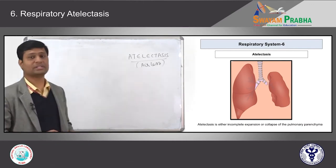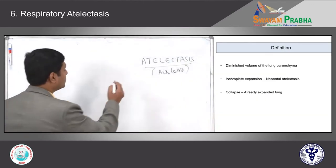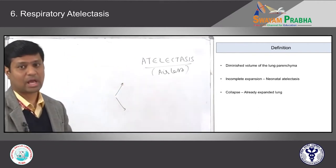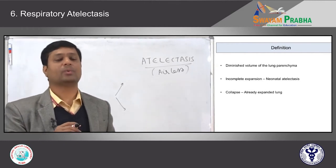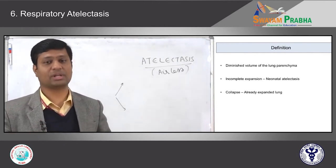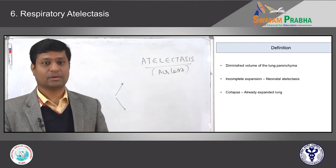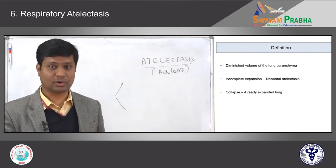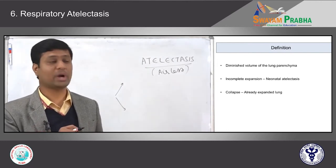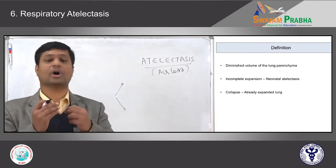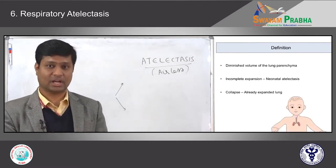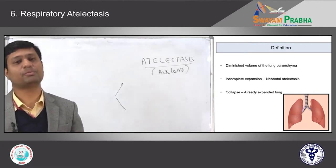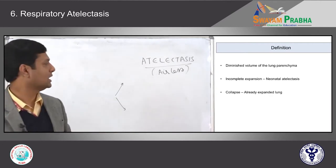How do we classify atelectasis? There are two types. For example, when a mother delivers a baby, the neonatologist thinks: if the baby should be healthy, it has to cry immediately and loudly after birth. The louder the baby cries, the more the lung expands properly — this is mainly needed for proper expansion of the lung parenchyma.